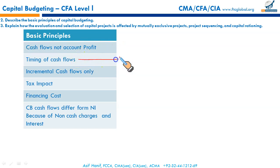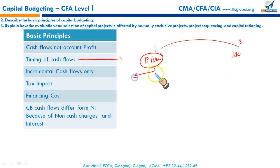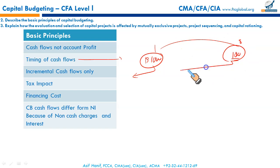Timing of cash flows is very important. A thousand dollars received at the end of year one versus a thousand dollars received at the end of year eight — the earlier cash is much more valuable. The cash received is more valuable if received as early as possible during the life of the project. Cash flow far away from the current period will have less present value. The sooner you receive the cash, the better.